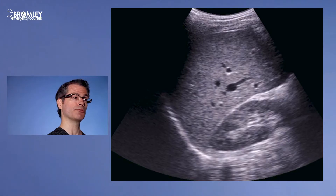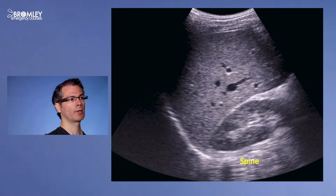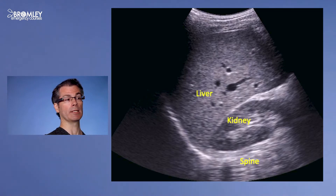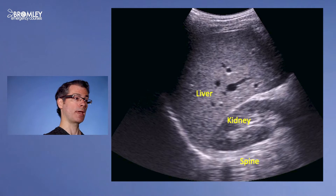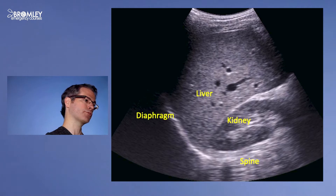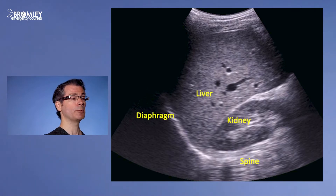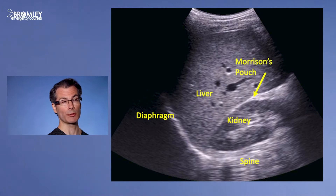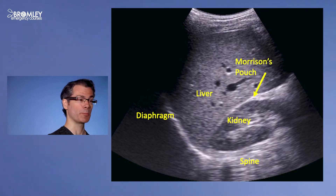Here's an image of a normal right upper quadrant. At the back of the image is the spine, at the front is the liver, and in between is the kidney. To the patient's head, to the left of screen, is the diaphragm. And in between the liver and the kidney is the potential space, which we call Morrison's pouch.